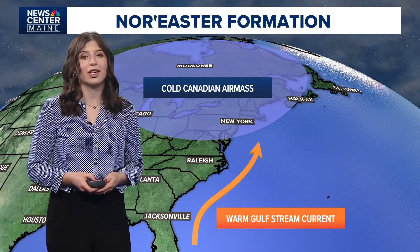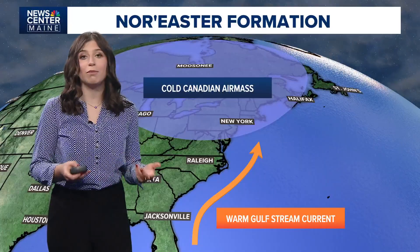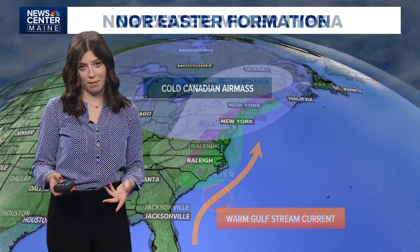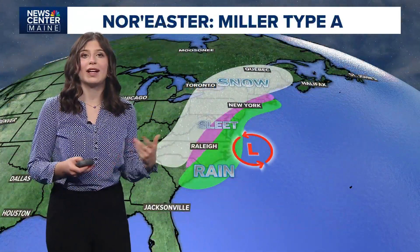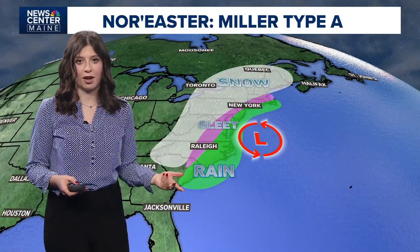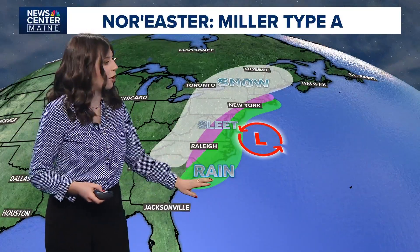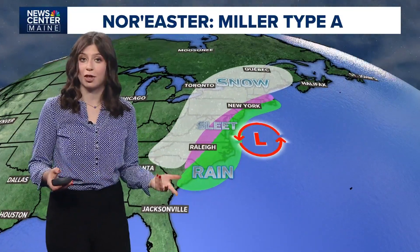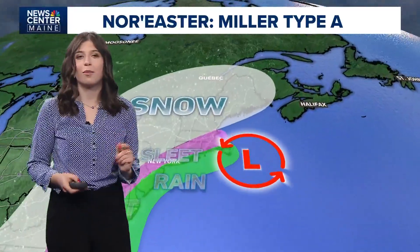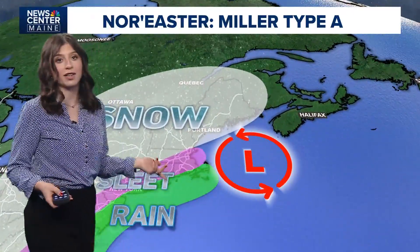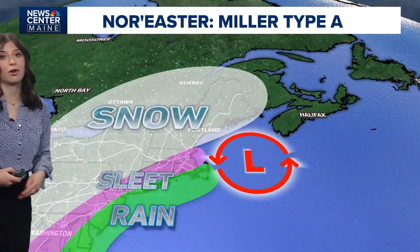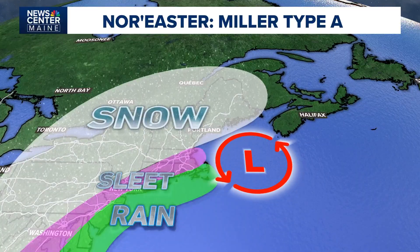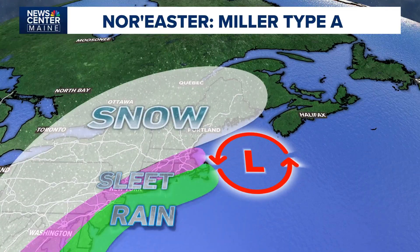Nor'easters actually come in two types, called Miller types — Miller type A and Miller type B. Type A is what you might typically think of with a nor'easter: this storm forms along the southern coast of the U.S. and tracks up the coastline. Keep in mind the precipitation delineations are approximate, as every storm is different based on the temperature and the exact location of the area of low pressure.